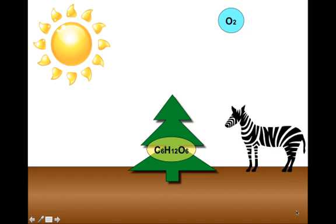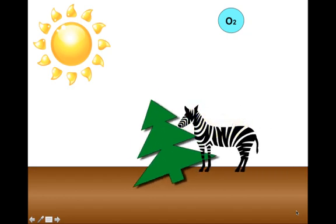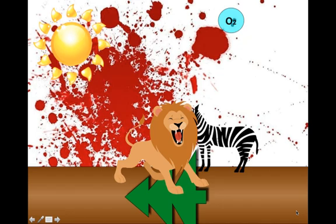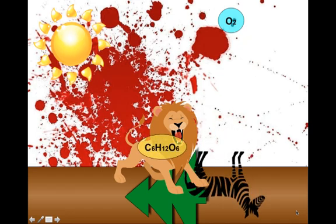And then along comes a zebra or any mammal or any organism for that matter and it can eat the tree and get the sugar. And if that animal stays there long enough eventually a lion will come along and eat it. And then the lion ends up getting some of the sugar and other stuff that was stored in that zebra and it can also breathe in the oxygen. I guess the zebra could have breathed in the oxygen too if it had been faster. And there you have photosynthesis.